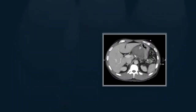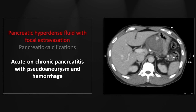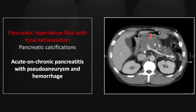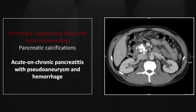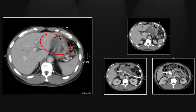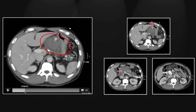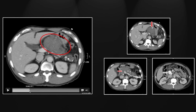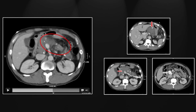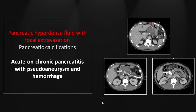Our next case is an acute on chronic pancreatitis, this one with erosion into the gastroepiploic artery with subsequent pseudoaneurysm formation and hemorrhage. You see the little pseudoaneurysm right here — a little focus of extravasation — but there is otherwise extensive hyperdense fluid throughout the pancreas, expanding the parenchyma, which in turn shows any number of pancreatic calcifications consistent with chronic pancreatitis, even more prevalent in the pancreatic head. Similar to the preceding case, we have active hemorrhage due to erosion into a vessel, with pseudoaneurysm formation and active extravasation into the pancreatic parenchyma itself. That is another case of acute on chronic pancreatitis with a hemorrhagic component.